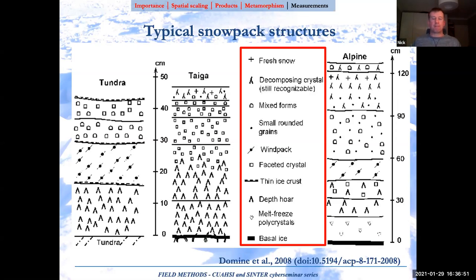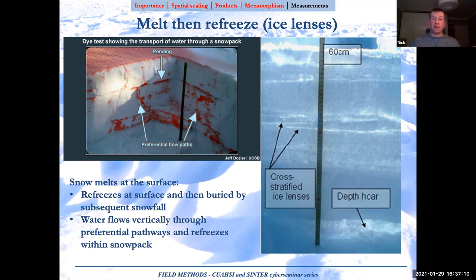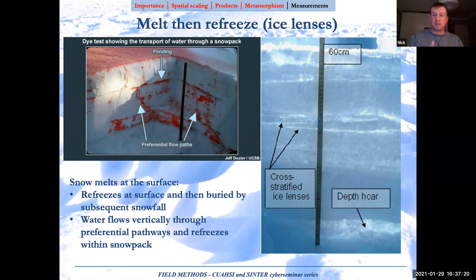Melt and refreeze is very important. An experiment using food dye in a watering can sprayed on the snow shows how as snow melts from top to bottom it will refreeze within. You can think of it like a pervious rock — like limestone — looking for weaknesses and cracks and forcing preferential flow pathways. This creates ice lenses and crusts within the snowpack. These can be picked up from radar and certainly have a big impact on remote sensing of snow.